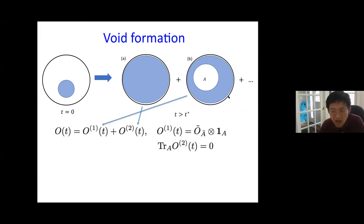The void formation process is exponentially suppressed at early times, but as time goes on more and more operators can develop such a void — the number of operators that can develop a void grows exponentially. After a certain time, these two processes balance, leading to saturation of S_Ā. You can show that this saturation time precisely corresponds to the saturation time for SA. If you ignore void formation, you violate unitarity, just as in the black hole case. For multiple intervals, the different patterns of void formation in integrable vs. chaotic systems lead to different patterns of entanglement growth.